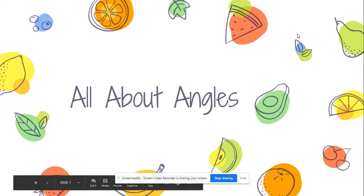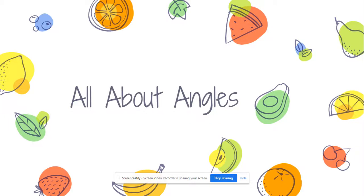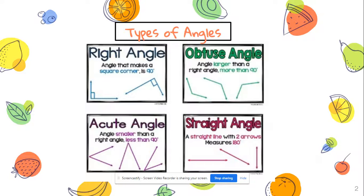Today we're going to talk about angles. First, before we talk about angle relationships, let's review all the different types of angles. We have a right angle — these are angles that are 90 degrees. Think of the corner of a room. A square and a rectangle all have 90 degrees for each of their corners.